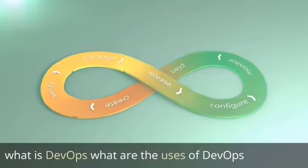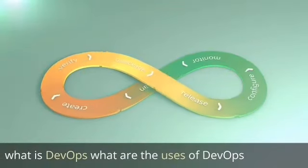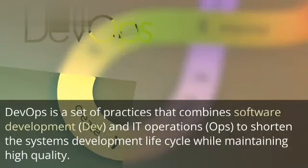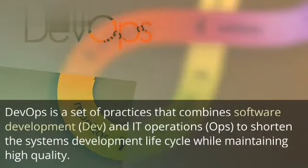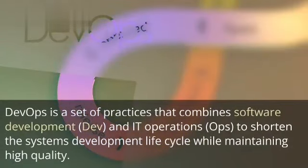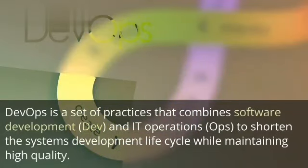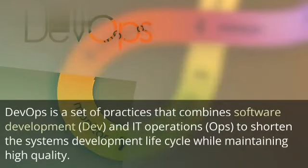What is DevOps? What are the uses of DevOps? DevOps is a set of practices that combine software development (dev) and IT operations (ops) to shorten the system's development life cycle while maintaining high quality.